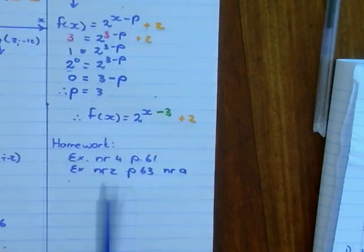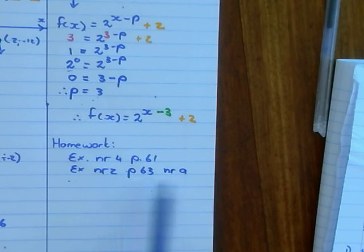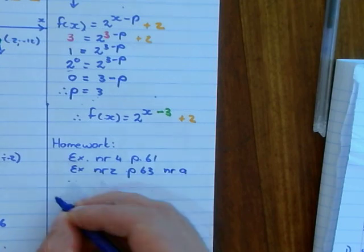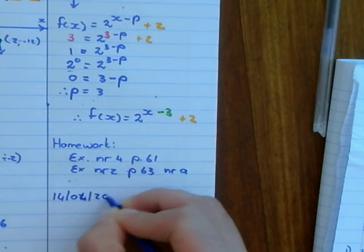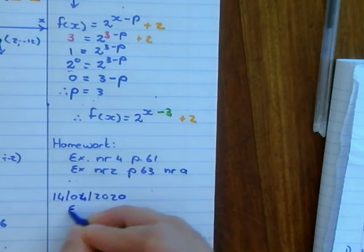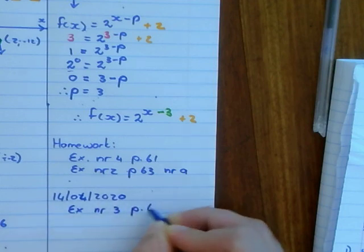Okay, your homework. There's your homework for today. Number 4 on page 61 and number 2 on page 63. Number 63 is only number A, not number B. And then tomorrow, there's no video, but you can continue with homework. And that's exercise number 3 on page 63.